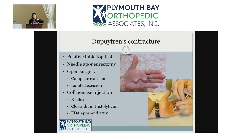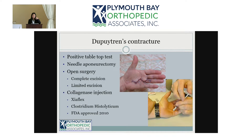As long as you can lay your hand flat on a table you don't have to do anything about it, but as Dupuytren's progresses it causes the fingers to curl up. Once you can't lay your hand flat — what we call a positive tabletop test — that's when we think about treatment. The three main treatment options are the needle aponeurectomy, where you use an 18-gauge needle to cut that cord-like structure and straighten the finger. It is a blind procedure though.